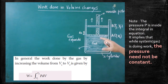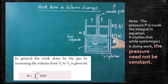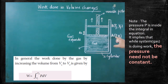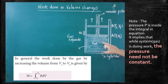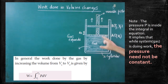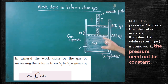We have to write: work done by the gas on the piston. Here, this is the initial position of the piston. A is the initial position of the piston, PI is the initial pressure of the gas, and VI is the initial volume of the gas. After the expansion, the gas pushes the piston in the upward direction. Therefore, work is done by the gas.